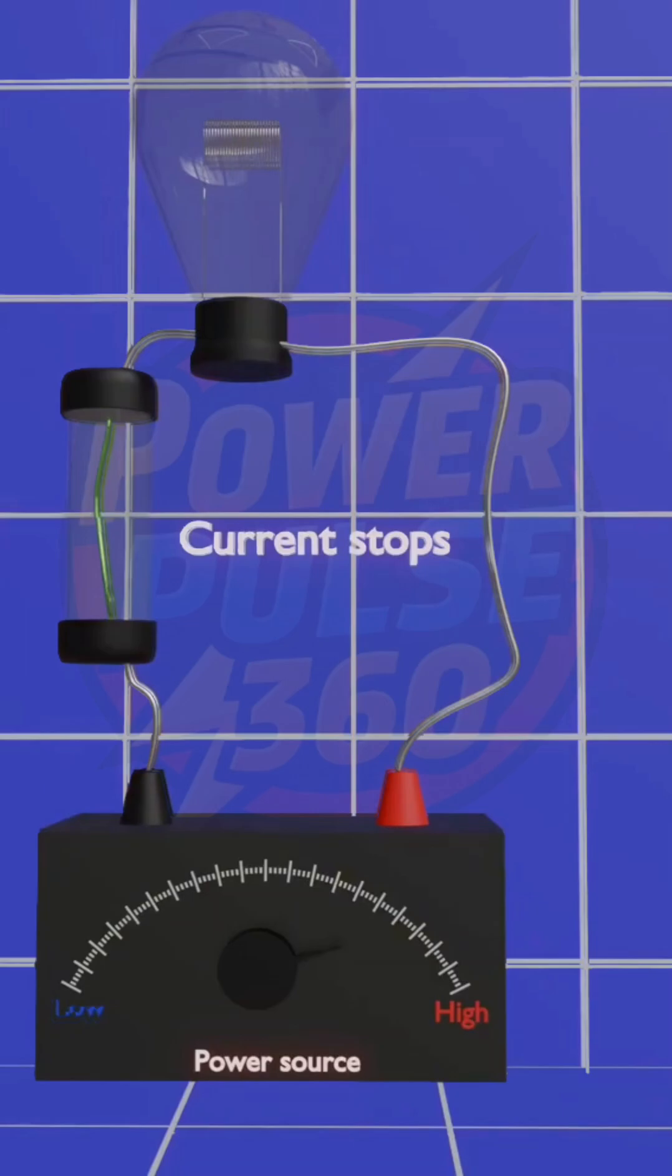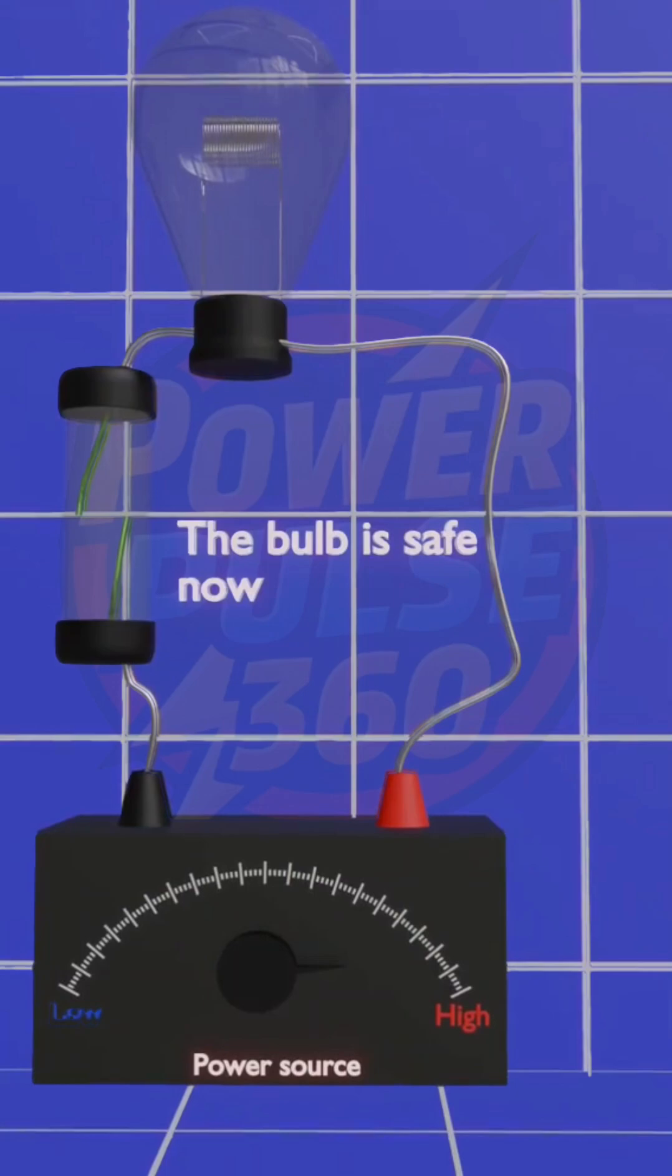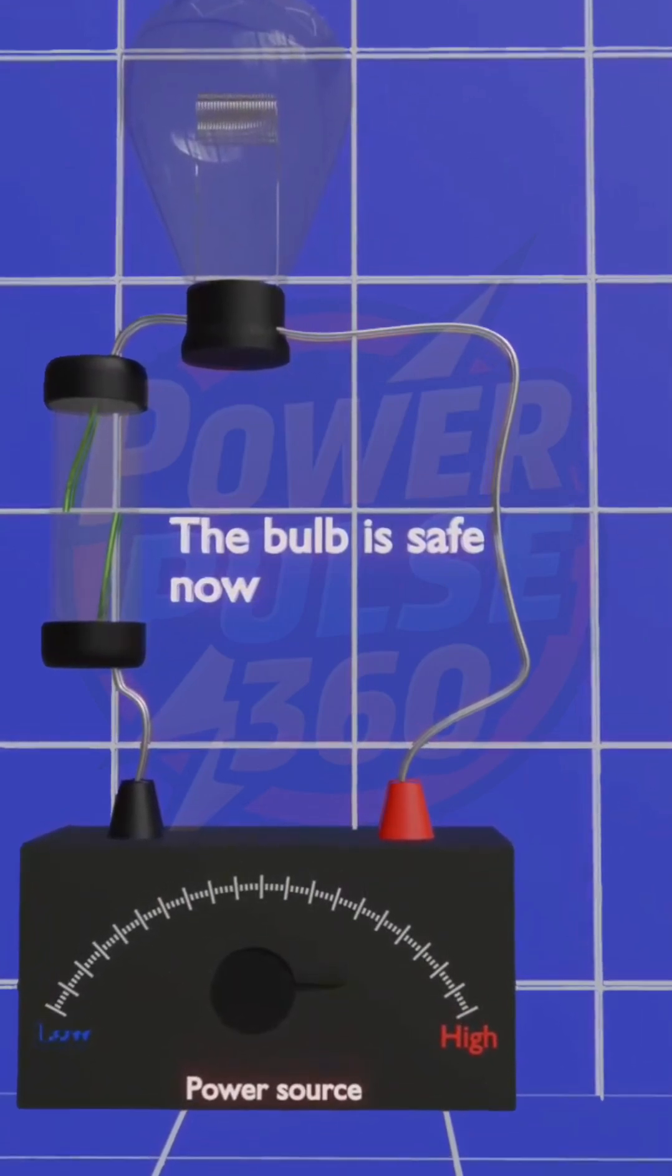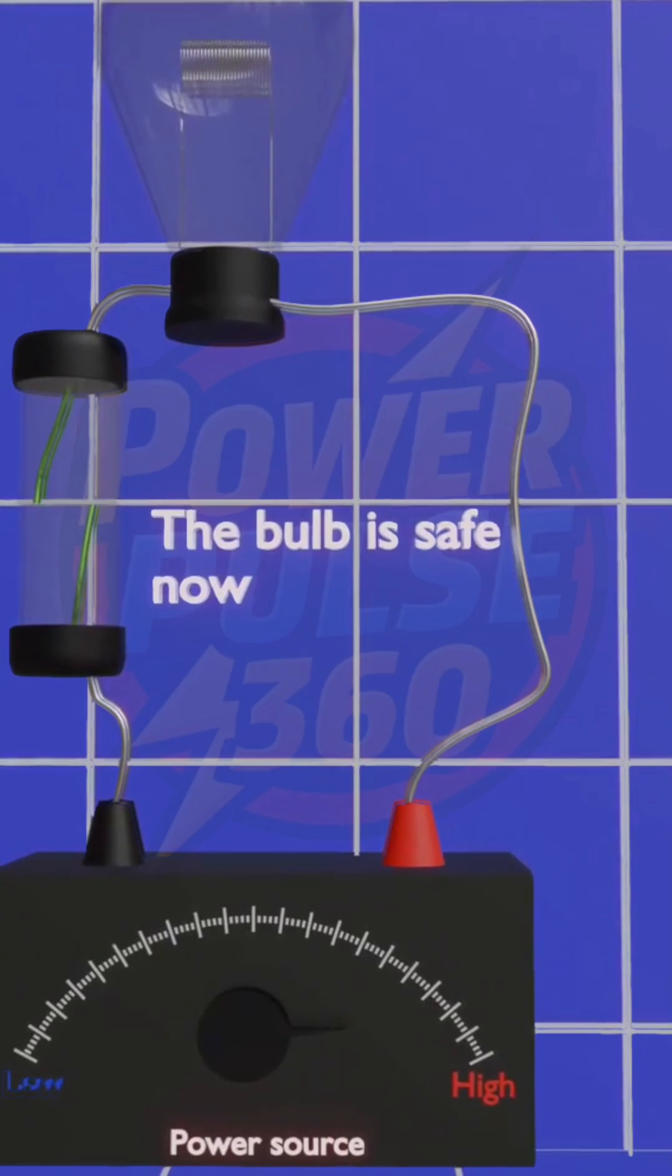As the current continues to rise, the wire eventually melts and breaks, stopping the electricity flow instantly. This simple yet effective mechanism prevents excessive current from damaging appliances or causing electrical fires.